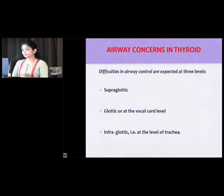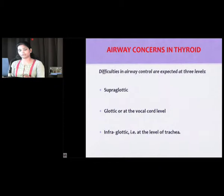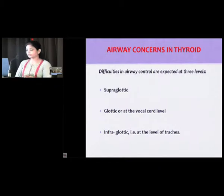Specifically pertaining to thyroid, difficulties in airway control are expected at three levels. They can be supraglottic — that is above the level of vocal cords — or glottic, at the level of vocal cords, or infraglottic, that is at the level of trachea.